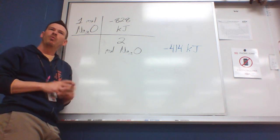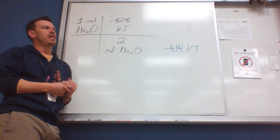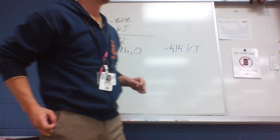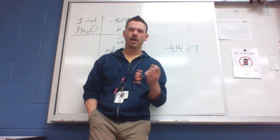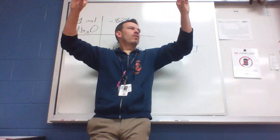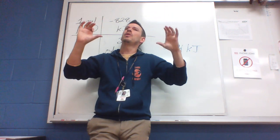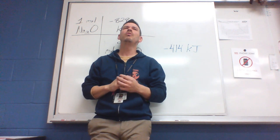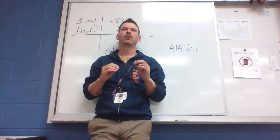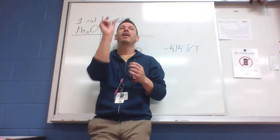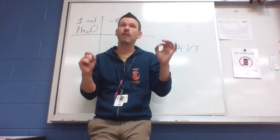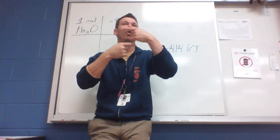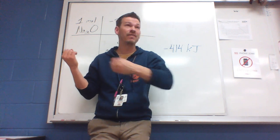Another way they can test you is by showing a reaction with a known enthalpy and then asking for the enthalpy of the reversed reaction. Look at the two reactions — all they've done is flip the yield sign. Write this down: if a reaction is exothermic going forward, it's endothermic going backward, and vice versa. If heat is given off going one way, heat must be taken in going the other way.